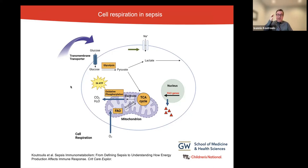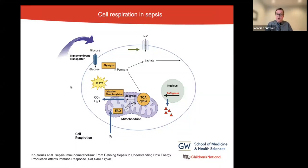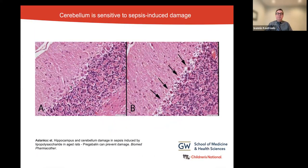As a result, there is a metabolic shift and glycolysis becomes the primary metabolic pathway for the body's energy production. Because oxidative phosphorylation is impaired, there is mitochondrial dysfunction and fatty acid oxidation is also compromised. What happens in sepsis is similar to what has been described in cancer — cells switch from oxidative phosphorylation to glycolysis. Oxidative phosphorylation is a very efficient way to produce energy, producing 36 ATP molecules per glucose molecule, compared to only two ATP molecules per glucose molecule produced by glycolysis.